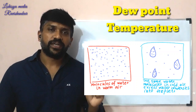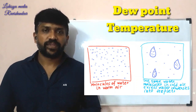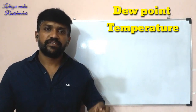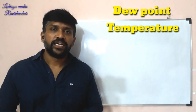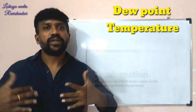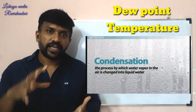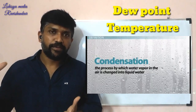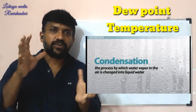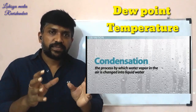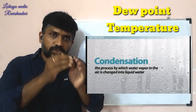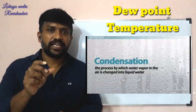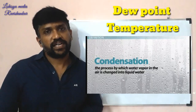Suppose the air temperature is 22 degrees Celsius and contains water vapors. Now, I will cool the air. When it becomes very cool, the vapor will condense. This condensation point is the dew point temperature. It depends on pressure, temperature, and volume.